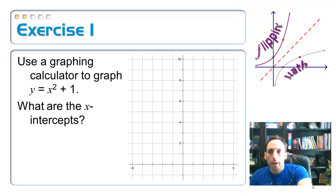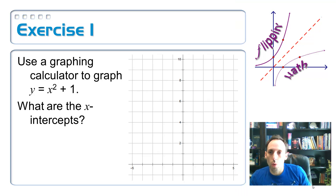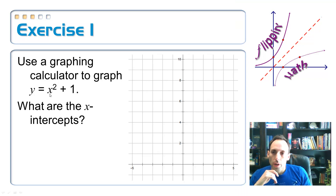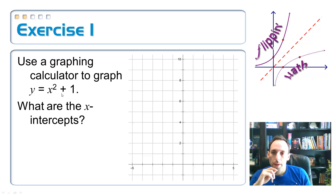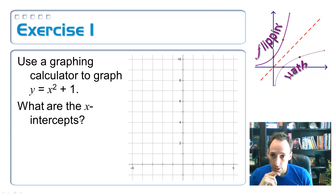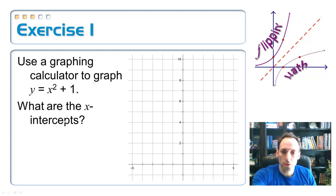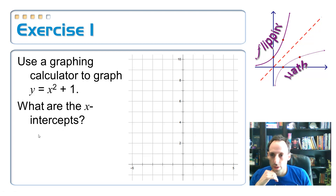Go ahead and pull out a graphing calculator and use it to graph the equation y equals x squared plus 1. Remember that whenever it's an x squared, we know this is going to be a parabola, like a U shape. I want to know what the x-intercepts are.